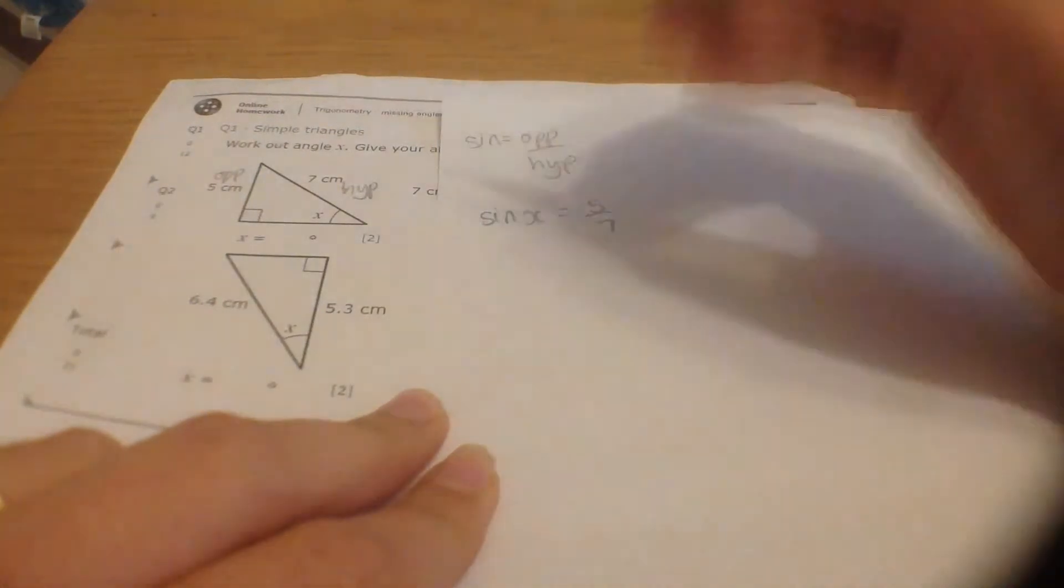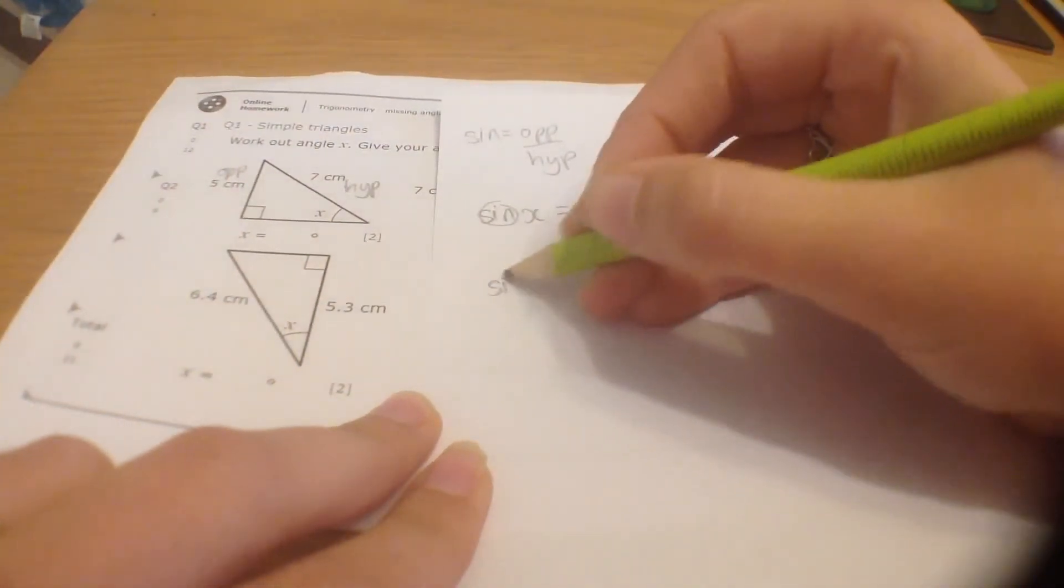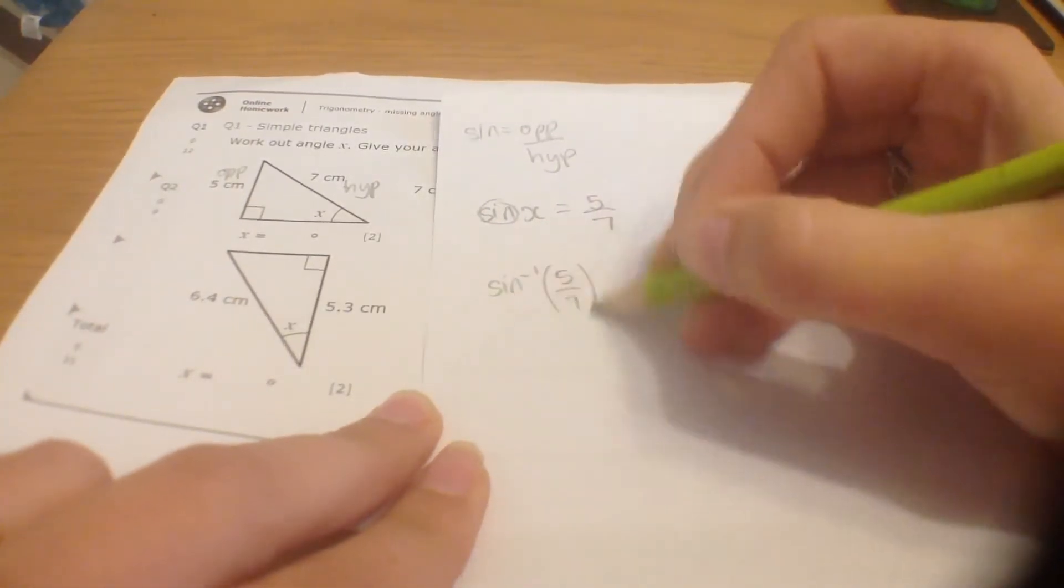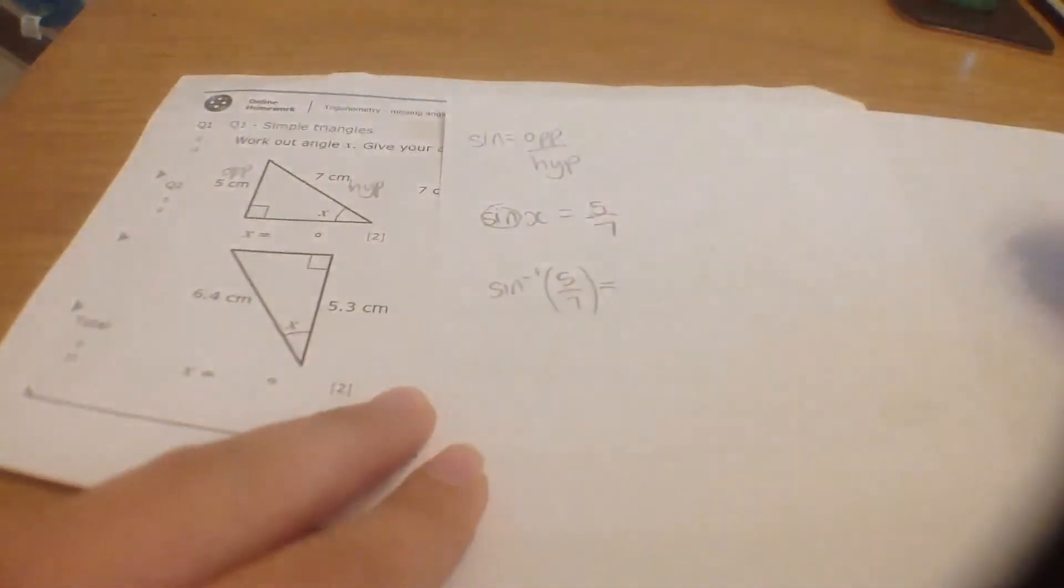I want to get rid of SIN. To get rid of SIN, I put sin minus 1. Not very imaginative. And then I put the fraction next to that, and I put that into my calculator. That would give my angle.